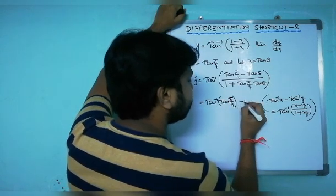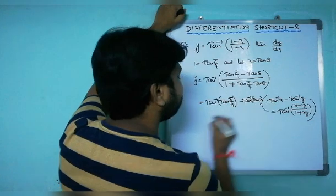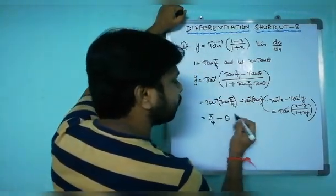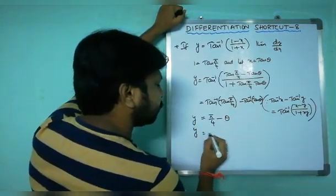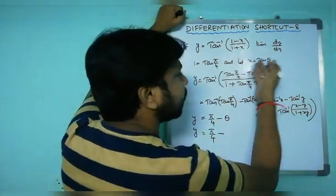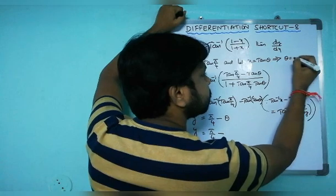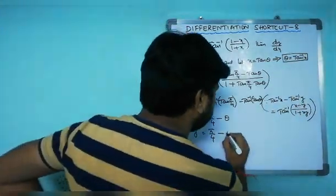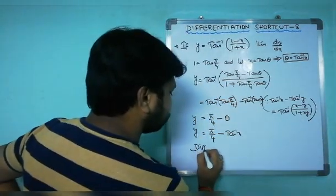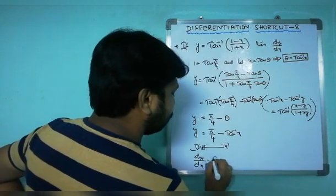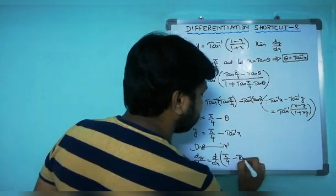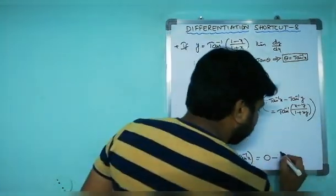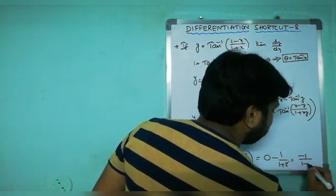So we get tan⁻¹(tan(π/4)) minus tan⁻¹(tan θ), which simplifies to π/4 minus θ. Since x equals tan θ, we have θ equals tan⁻¹(x). Substituting, y equals π/4 minus tan⁻¹(x). Differentiating with respect to x: dy/dx equals d/dx of (π/4) minus d/dx of tan⁻¹(x), giving zero minus 1/(1 plus x²). So the answer is minus 1/(1 plus x²).